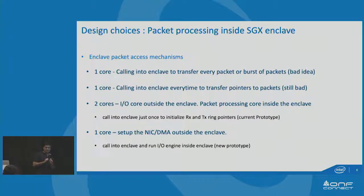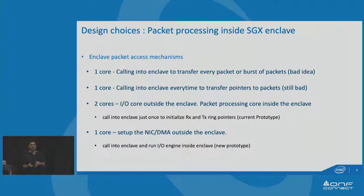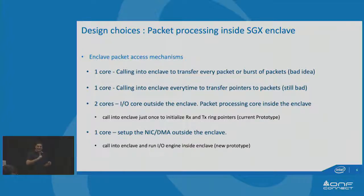Moving in and out from the trusted world to the untrusted world consumes a lot of cycles. The second approach is: I have data to process inside the enclave, but I don't transfer the entire big chunk of data into the enclave. I just go inside the enclave and tell it: this is my data you have to access — because the enclave can access the outside world, but the outside world cannot access the enclave. But that's still bad, because you're still going in and out of the enclave even though you're not carrying data with you.